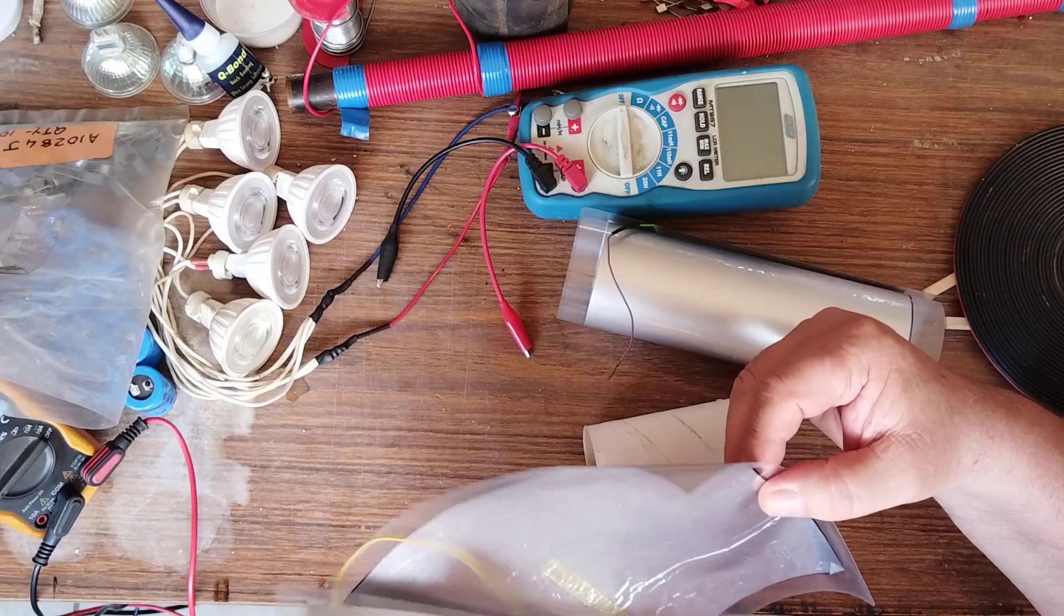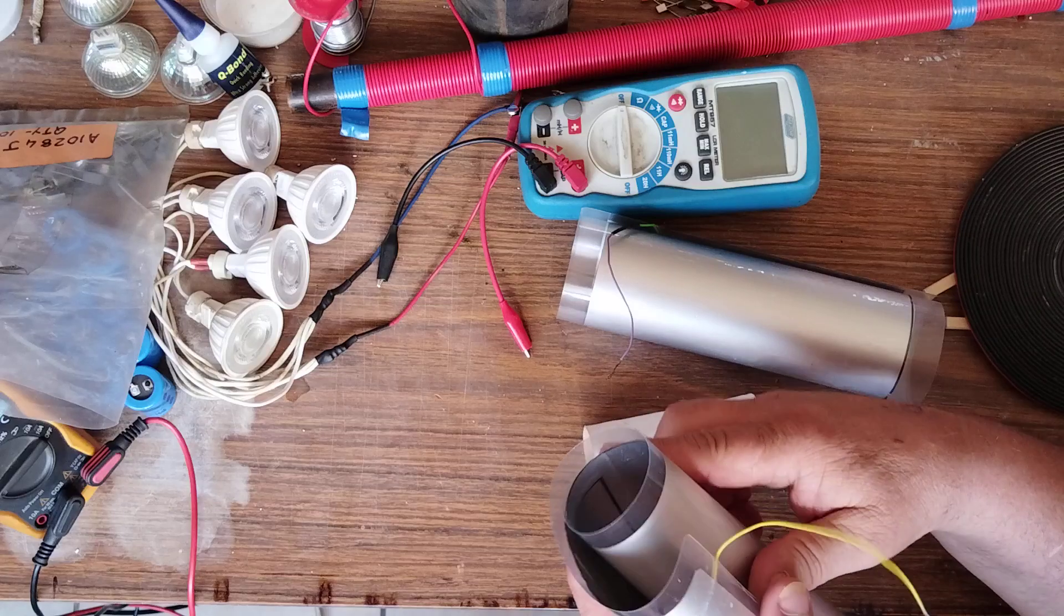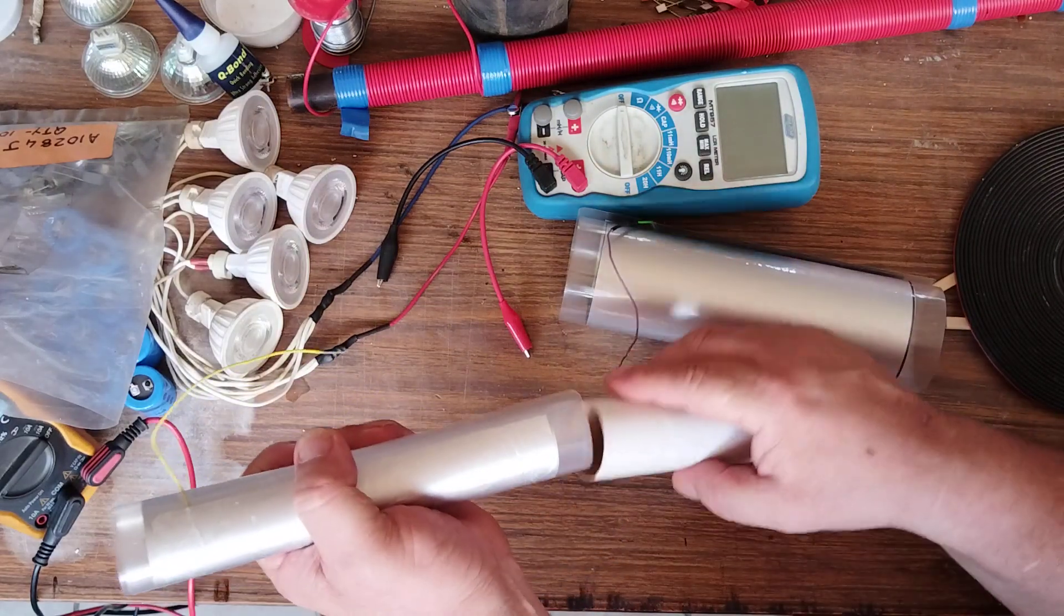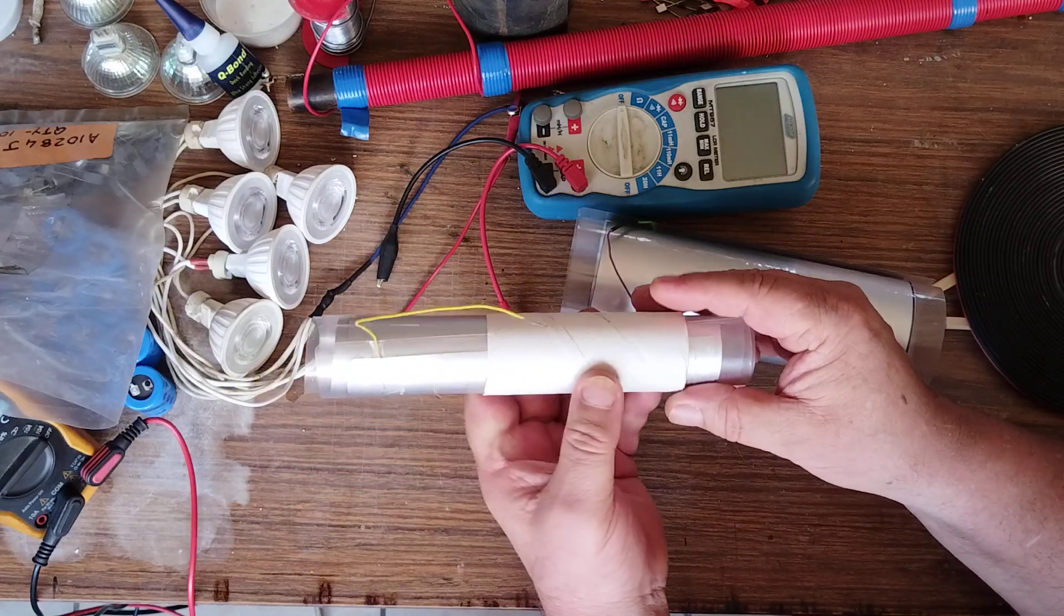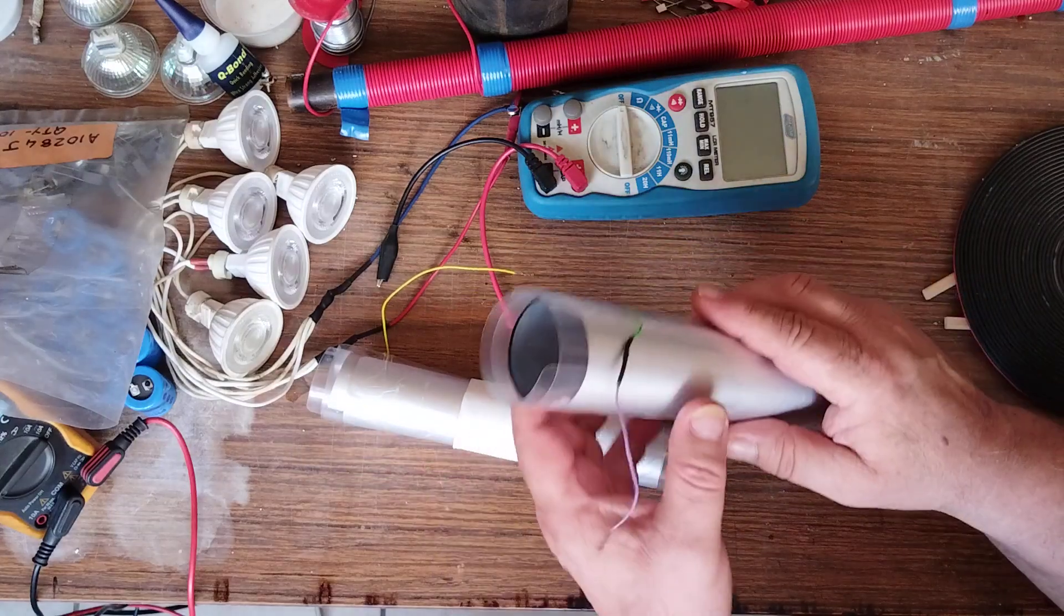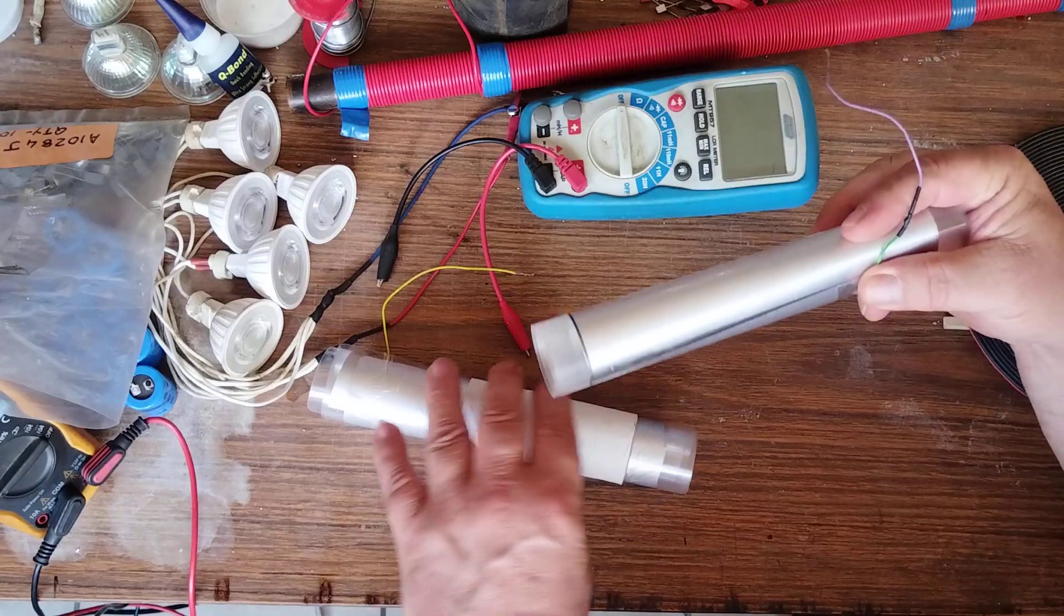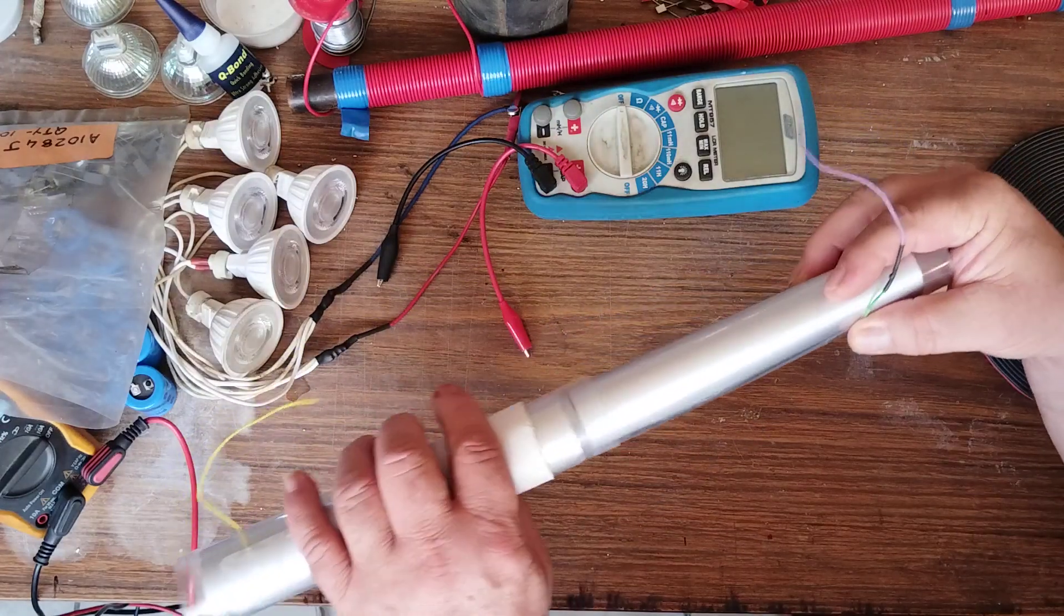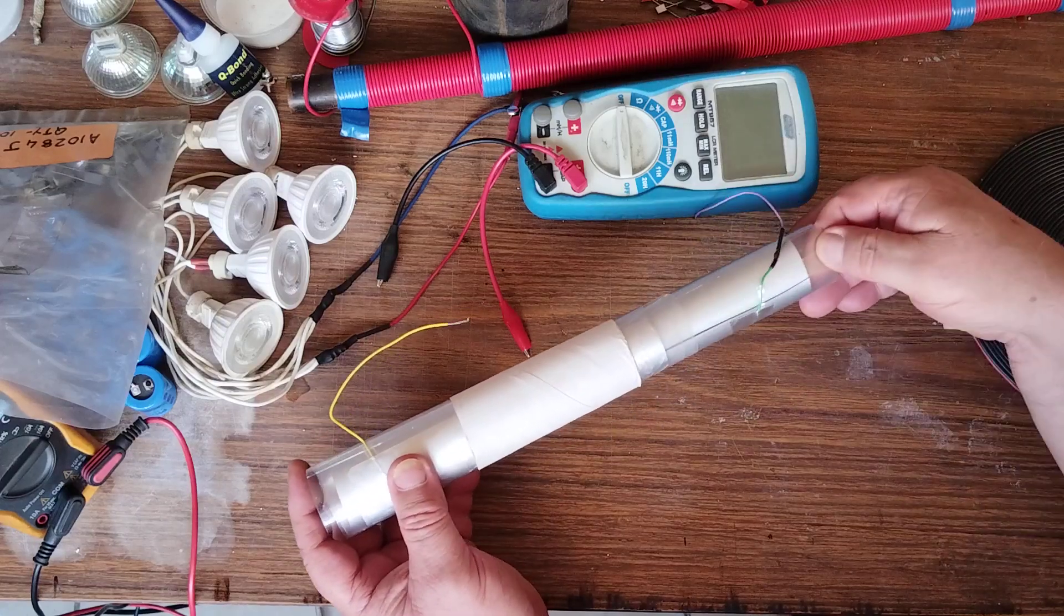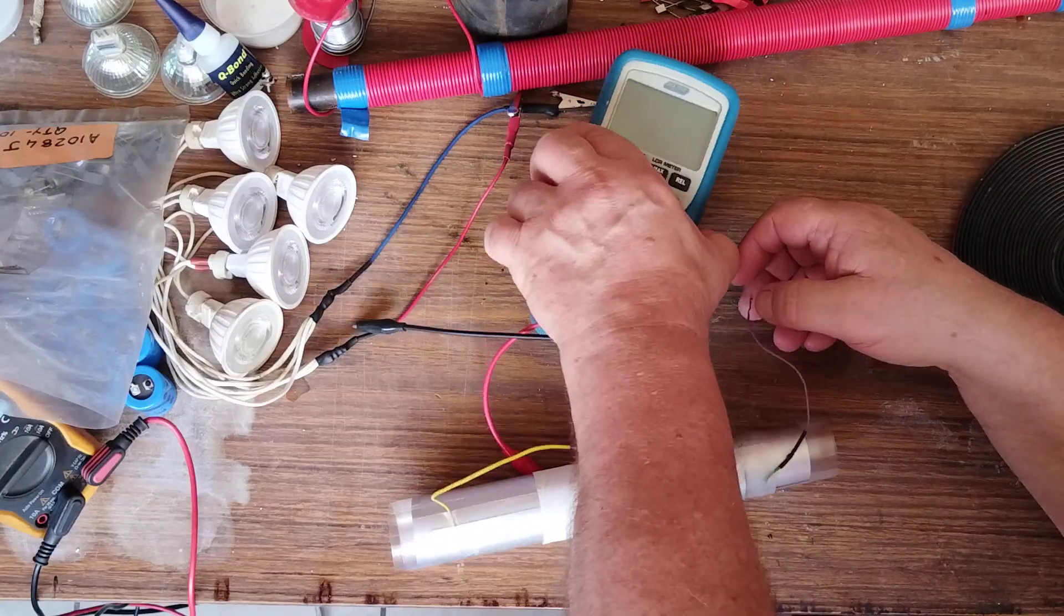Now the way I normally do it is roll it up, put it inside my cardboard roll here, and the second one. Roll it up and stick it down the center. And that way I've got an easy adjustable capacitor.